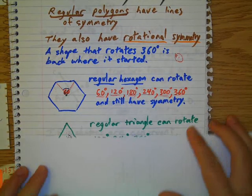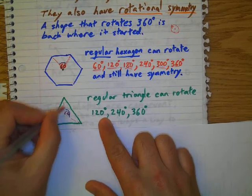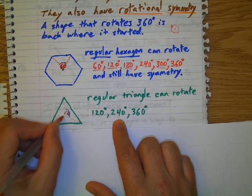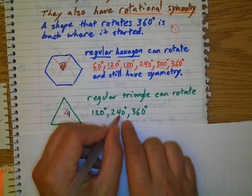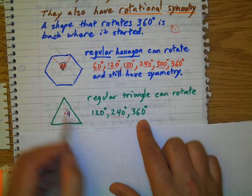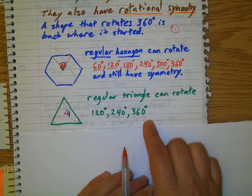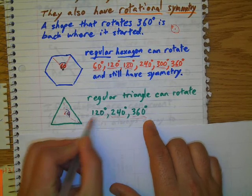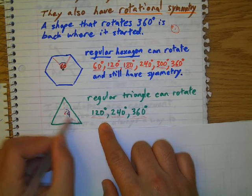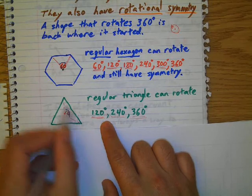We can also rotate a triangle 120 degrees and it will be back where it's at. And if I rotate it another 120 degrees, I'm back where I started. And if I multiply it another 120 degrees, I'm back where I started. So each time, I could rotate it, if I know this angle here, then I can rotate it that times an integer.